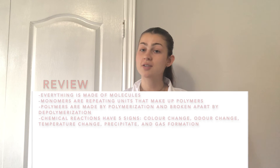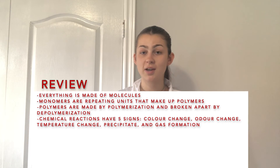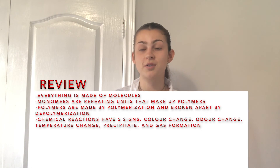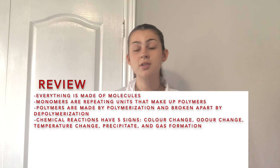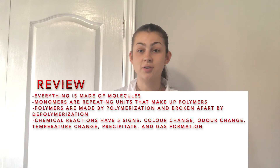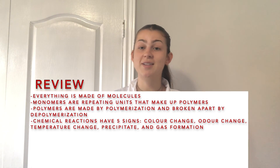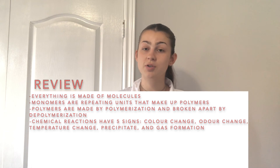We talked about a lot of new things today, so let's go over what we learned. First, everything around us is made of molecules. Second, sometimes small repeating units come together to form a larger unit — that larger unit is called a polymer and the small repeating units are called monomers. Formation of a polymer is called polymerization, and it has an opposite process called depolymerization, which breaks polymers down into monomers. Chemical reactions are responsible for polymerization and depolymerization. And finally, there are five signs in an experiment that tell us if a chemical reaction has occurred: color change, odor change, temperature change, precipitate, or gas formation. Bye for now!